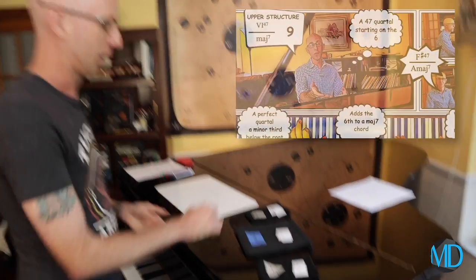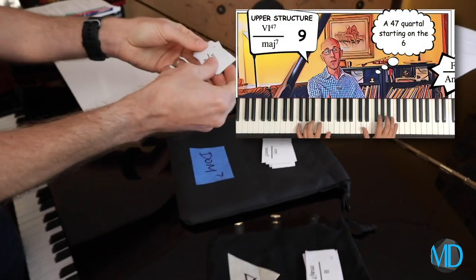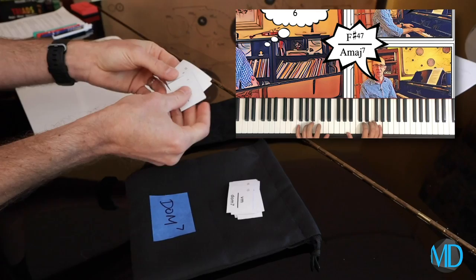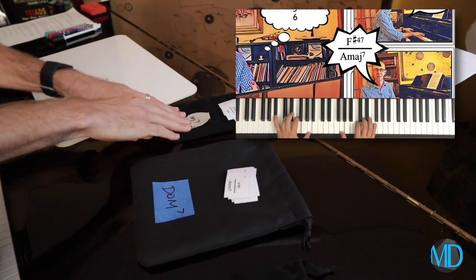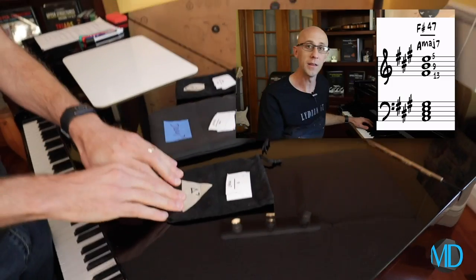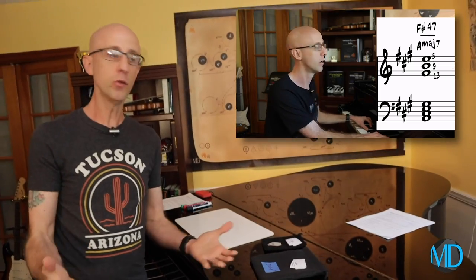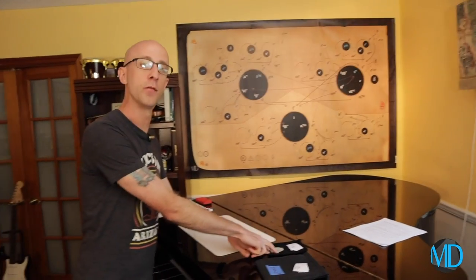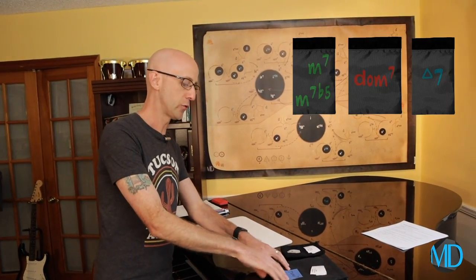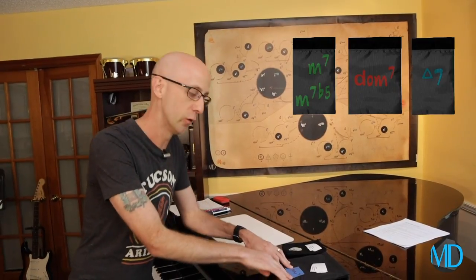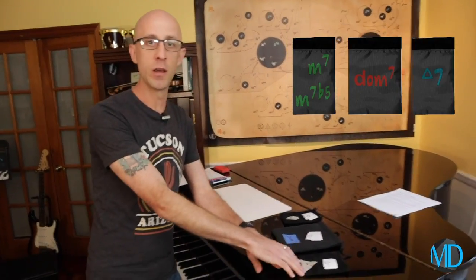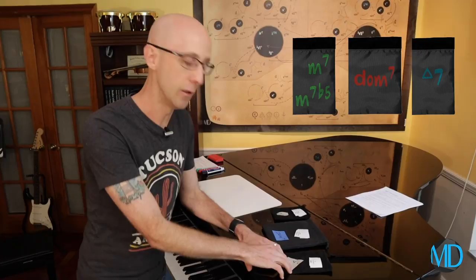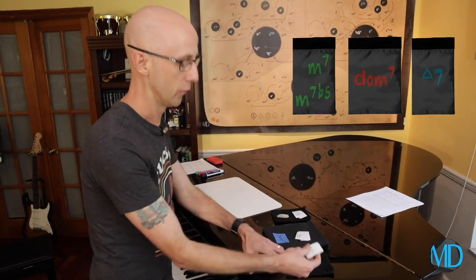We've got all of the upper structures from season one broken down here on these three bags. Each piece of paper represents an episode from season one and the three types of chords we use: minor sevens and minor seven flat fives, upper structures that go well with dominant seven chords, and other upper structures that pair well with major seven chords.